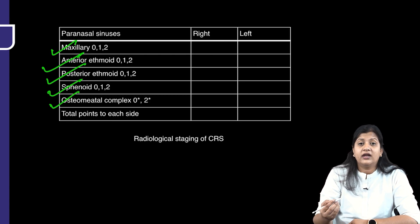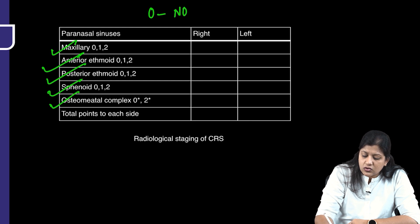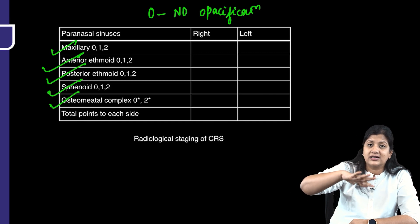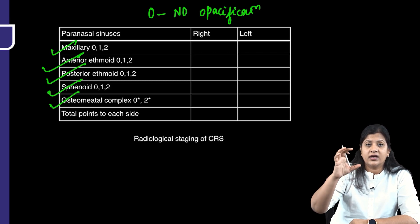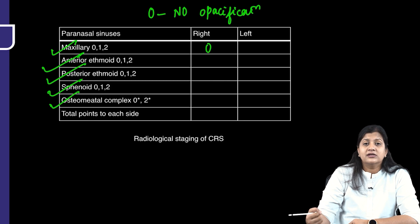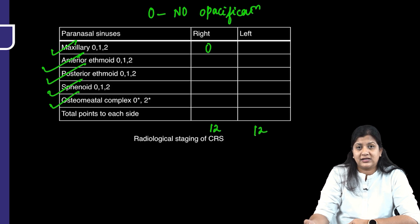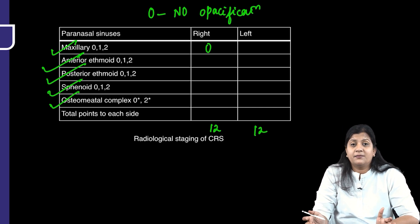For each sinus, you grade on 0, 1, and 2. Zero means no opacification — the sinus is clear and black on CT. One means partial haziness, and two means full haziness or complete opacification. You will view the CT, score the right side, then the left side. For all sinuses together you can get a maximum score of 12 on each side. Once you have scores for both sides, you can determine whether the patient has severe or mild disease.